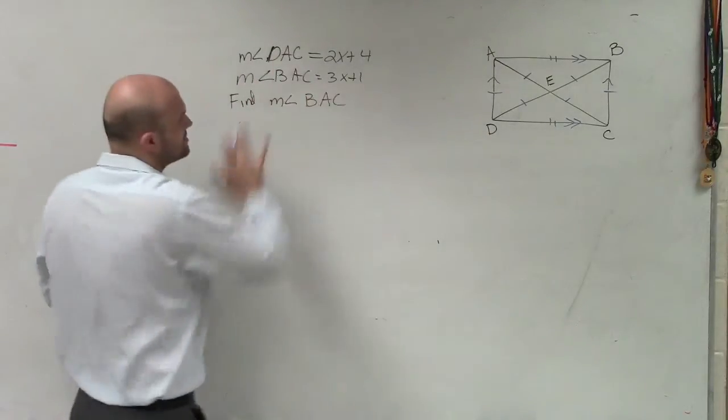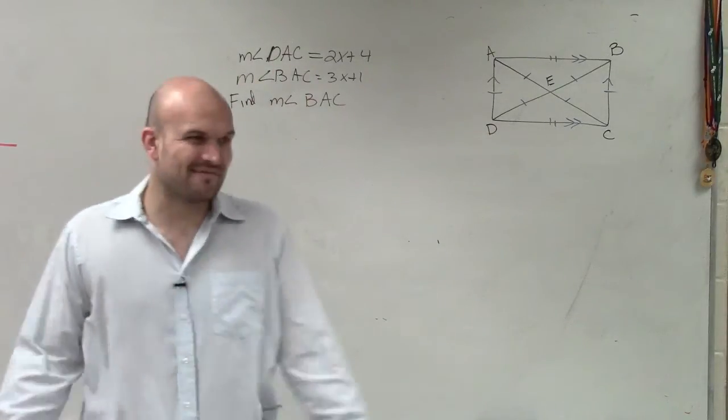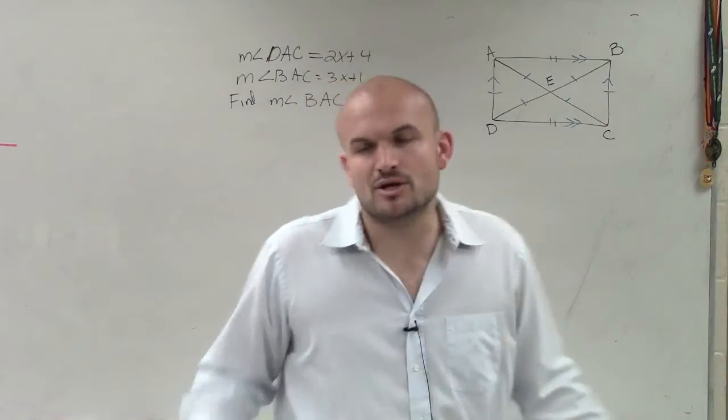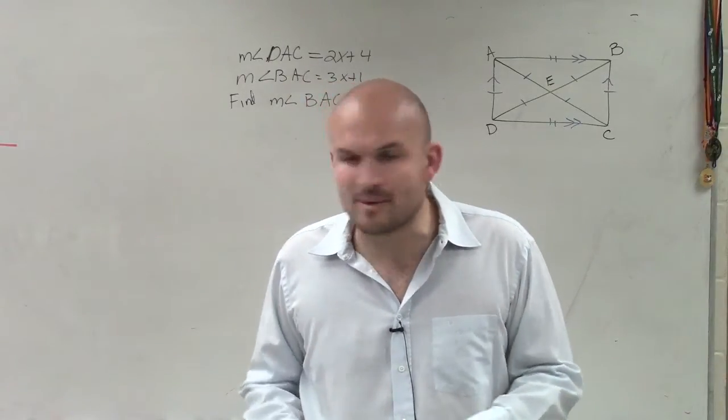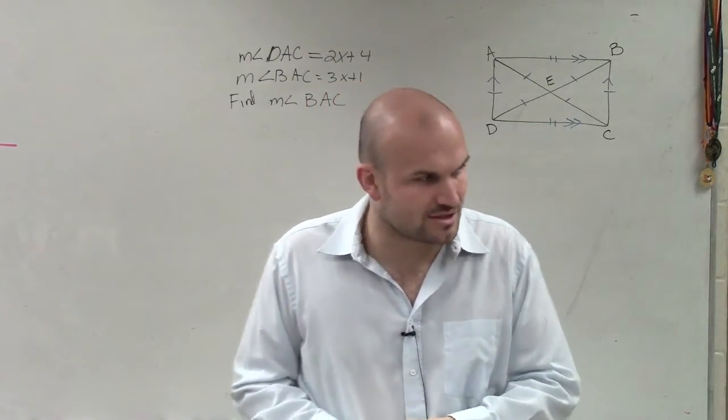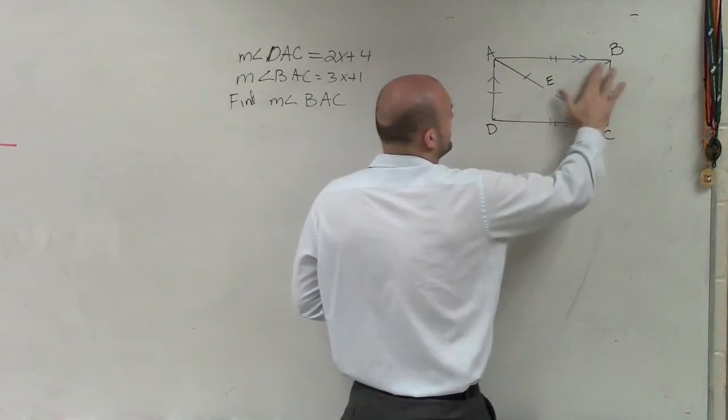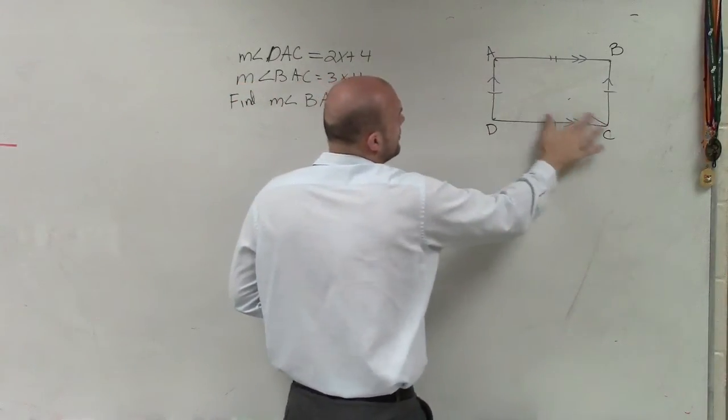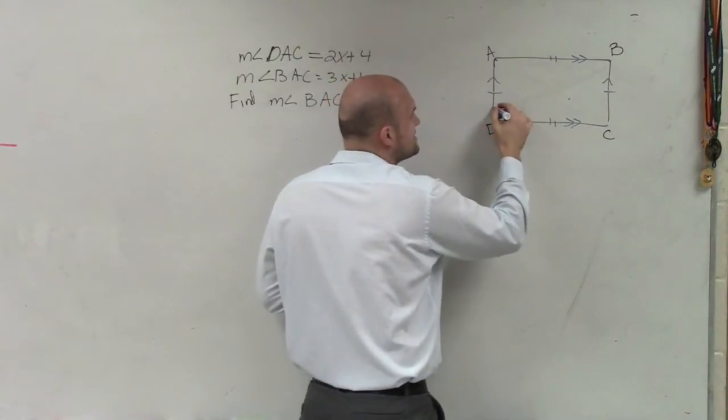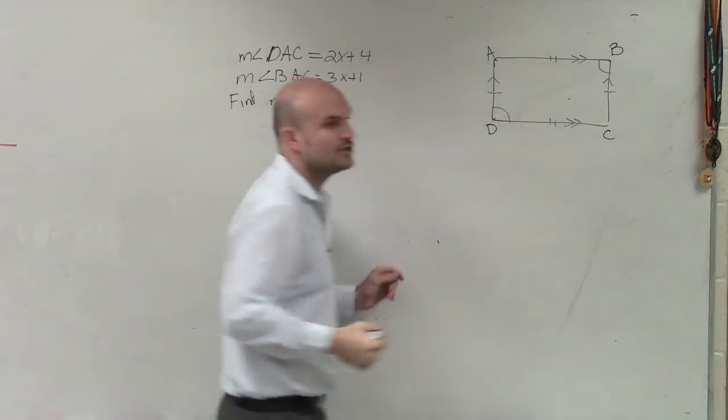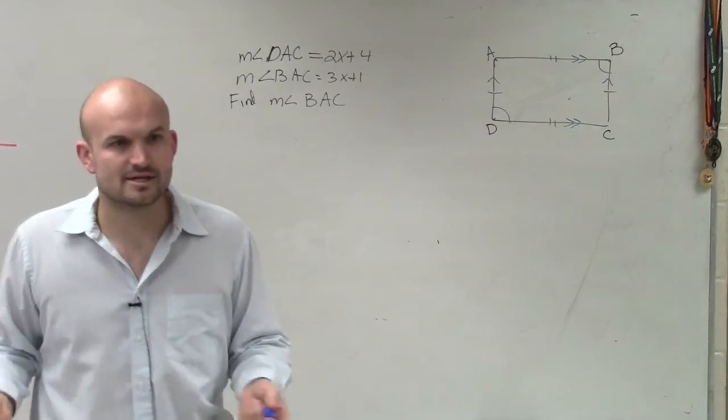However, our problem, guys, is we're talking about angles. They don't have anything to do with sides. So then we go through, all right, what is it we know then about rectangles and their angles? Well, we know, so we're not really talking about the diagonals here. But one thing we do know is that opposite sides are congruent, right? Opposite sides are congruent.